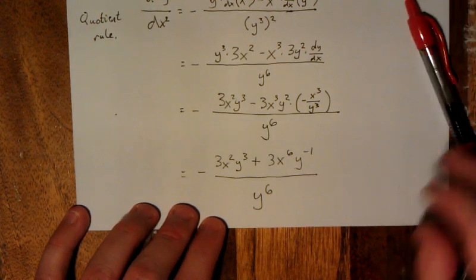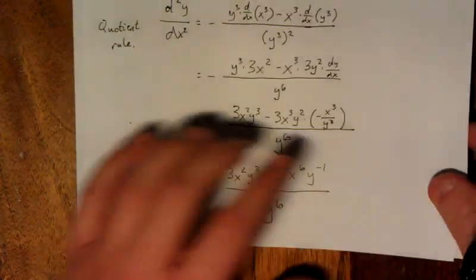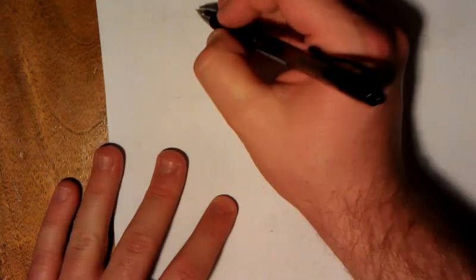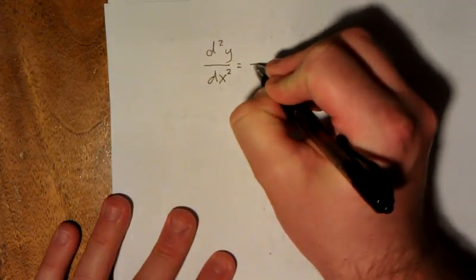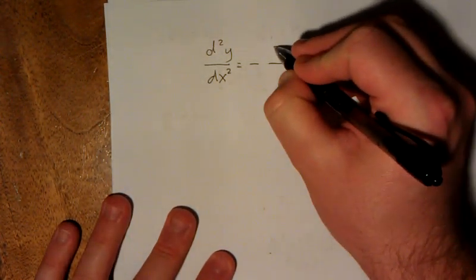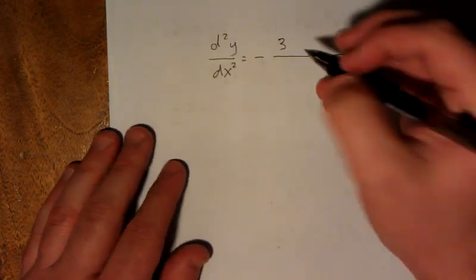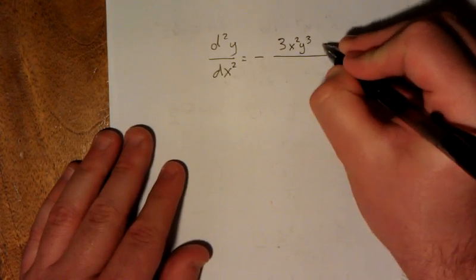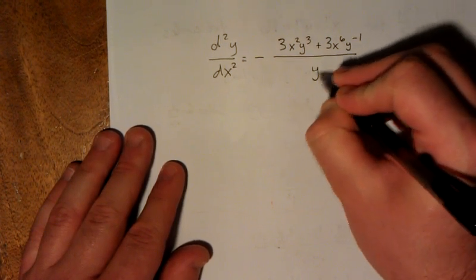So I'm going to recopy this expression at the top of the back of this page so that we can keep going. Assuming I can actually get these pages apart. So at this point, once again, we have that d squared y dx squared is equal to, we have a negative sign out front, and this was 3x squared y cubed, plus 3x to the sixth y to the minus one, all over y to the sixth.